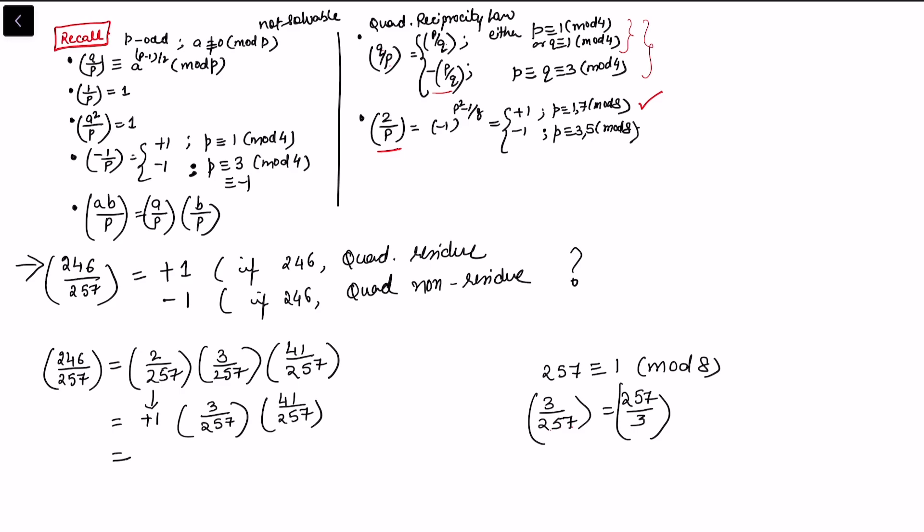Then 257 is further congruent to 2 mod 3, so this is (2/3). And (2/3) is congruent to -1 because (2/p) = -1 when p ≡ 3 (mod 8). So this is -1, and this first term is +1.